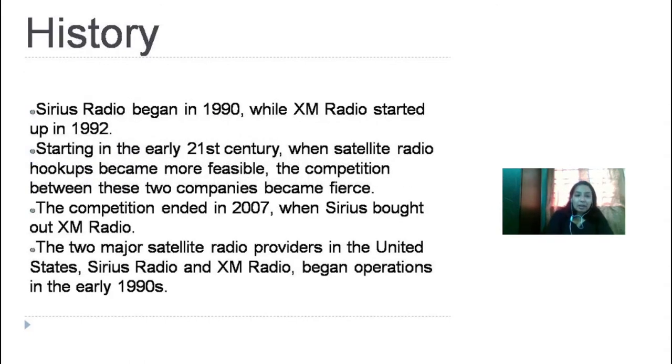A little bit of history about satellite radio. Sirius radio began in 1919, while XM radio started in 1992. Starting in the early 21st century, when satellite radio hookups became more feasible, the competition between these two companies became fierce. The competition ended in 2007 when Sirius bought out XM radio, the two major satellite radio providers in the United States.